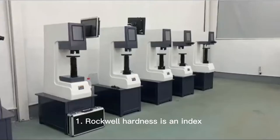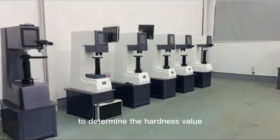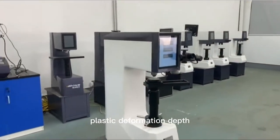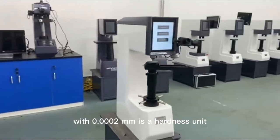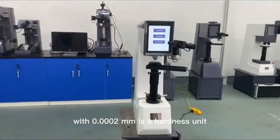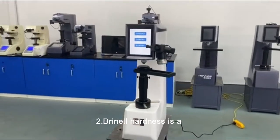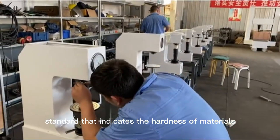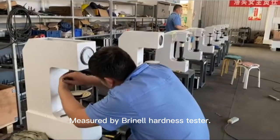One, different nature. First, Rockwell hardness is an index to determine the hardness value based on the indentation plastic deformation depth, with 0.00002 mm as a hardness unit. Second, Brinell hardness is a standard that indicates the hardness of materials measured by Brinell hardness tester.